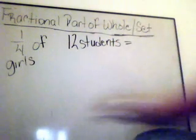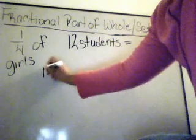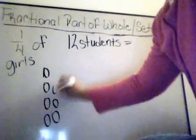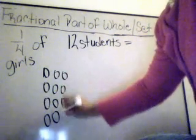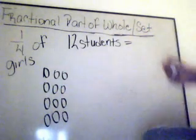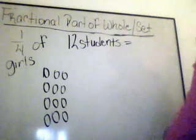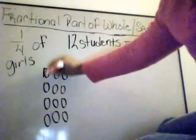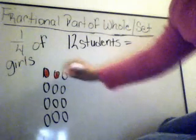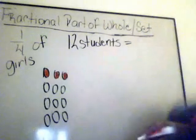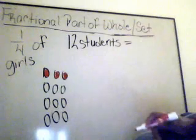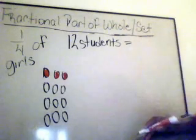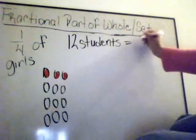There are two ways to find this out. First, we can draw a picture. You make 12 circles to represent your students. How many groups of one-fourths do you see? Here is one-fourth, there is one-fourth, there is another one-fourth, and another one-fourth. So how many of these students are girls? One, two, three. So our answer would be three.